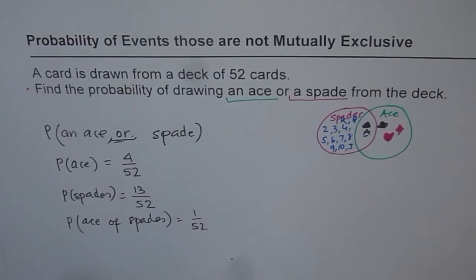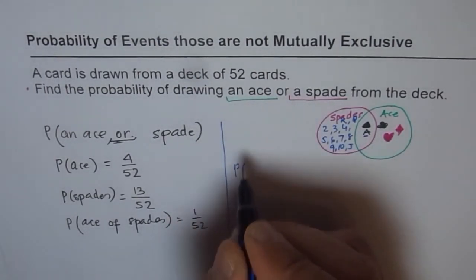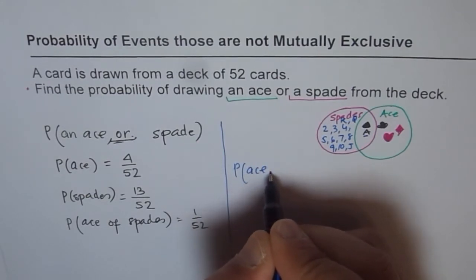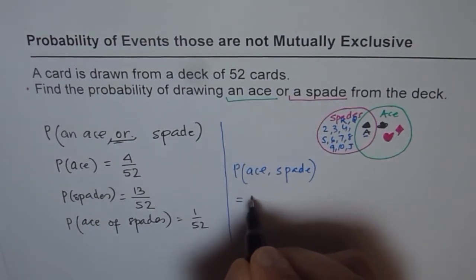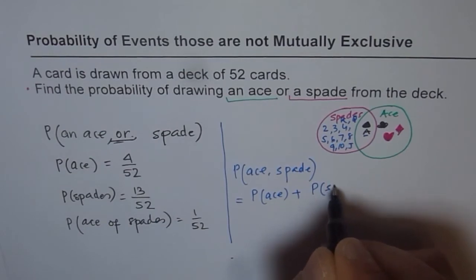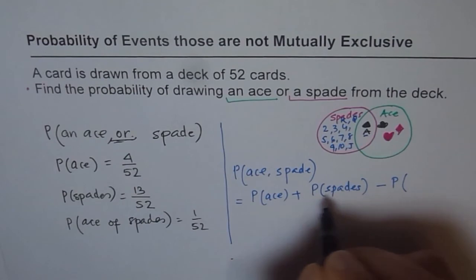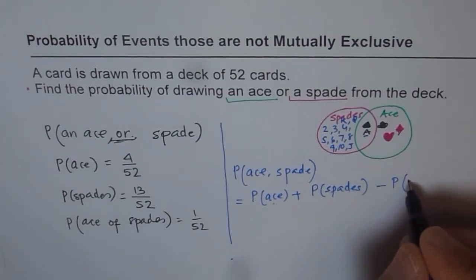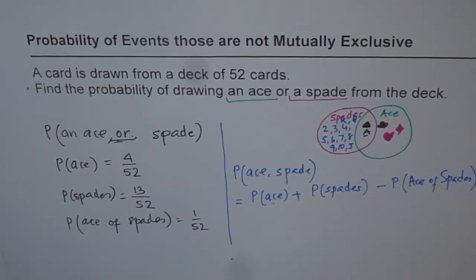So this is repeated and therefore, what should be the answer for the question? Therefore, we can say probability of getting ace or spade should be equal to probability of getting ace plus probability of getting spades minus probability of getting ace of spades. That is what is the answer.